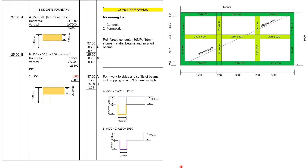Now that we're done with the concrete, we can move on to the formwork. The description reads: formwork to sides and soffits of beams, including propping up, exceeding 3.5 meters, not exceeding 5 meters high. We put 37 for the length of the perimeter beams, and to get 1.25 we said 500 times 2 plus 250, giving us 1,250, so we put 1.25. Moving on to the internal beams, the length is 25 meters, so we put 25. To get 1.05, we said 400 plus 250 plus 400, which is 400 times 2 plus 250, giving a total of 1,050, so we put 1.05. And just like that, we're done with the formwork to the sides and soffits of our beams.